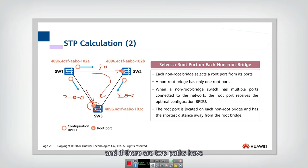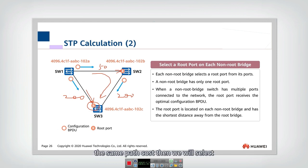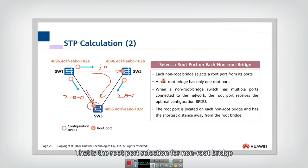If two paths have the same path cost, then we will select the root port based on the smallest bridge ID (BID). That is the root port selection for non-root bridges.